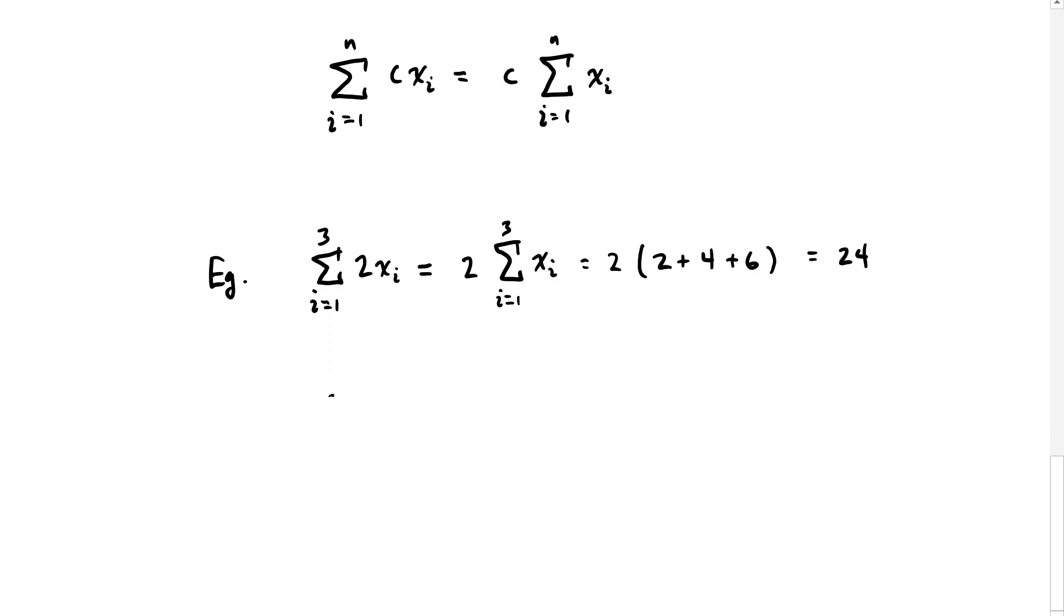But you can see that that is equal. If we didn't factor that out, we're going to have 2 times the first number, which is 2, plus 2 times the second number, which is 4, plus 2 times the next number, which is 6. That also adds up to 24: 4 plus 8 plus 12.